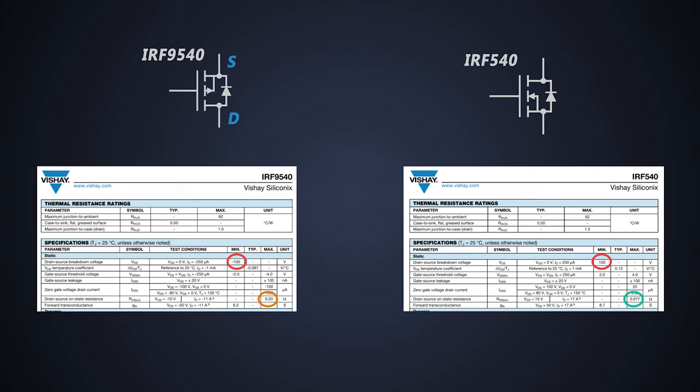So the N channel MOSFET will have less conduction losses during fast switching applications. So it's always advisable to use an N channel MOSFET for fast switching applications as it will dissipate less power.